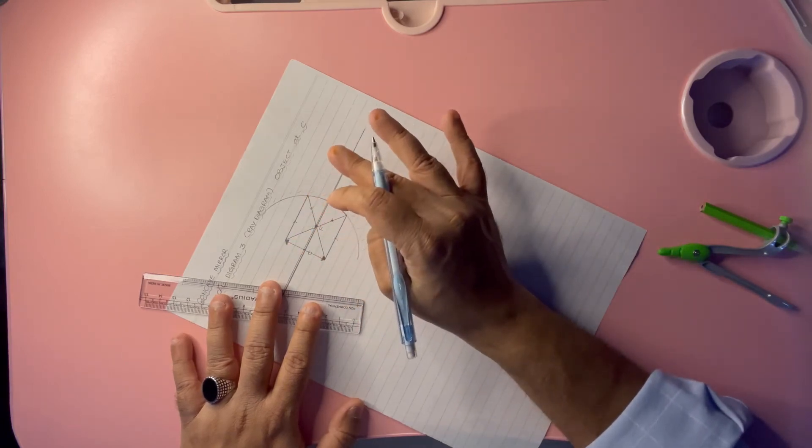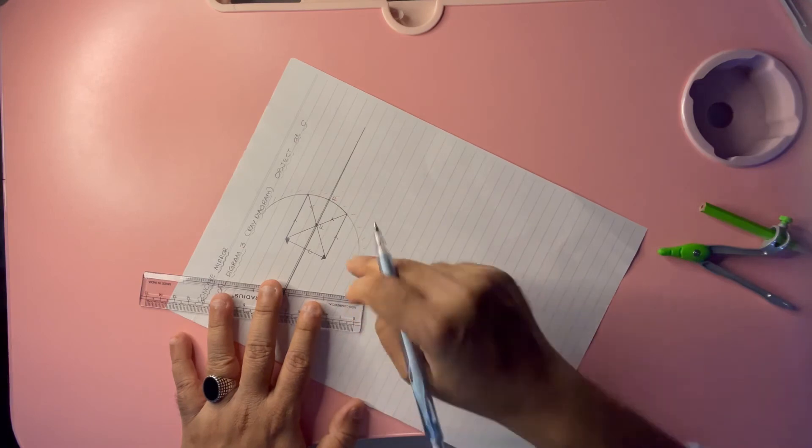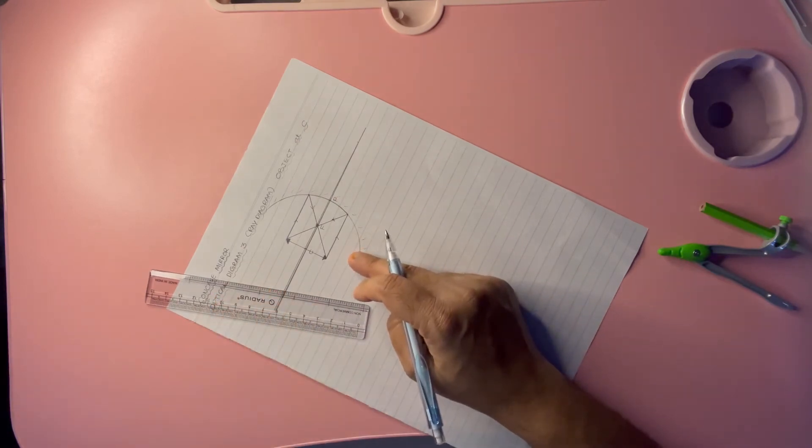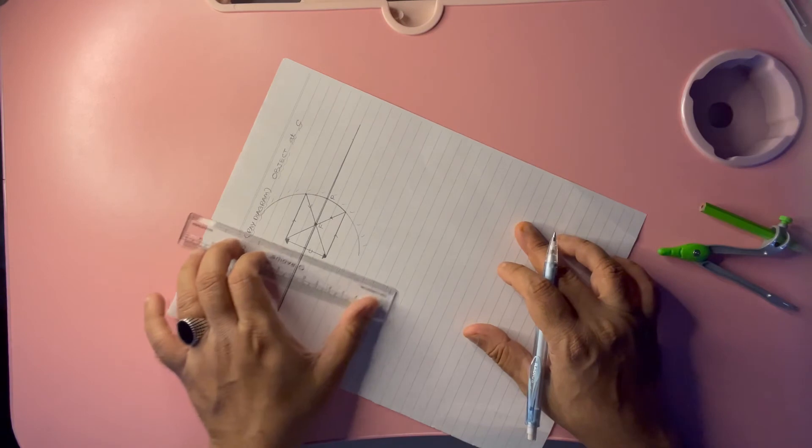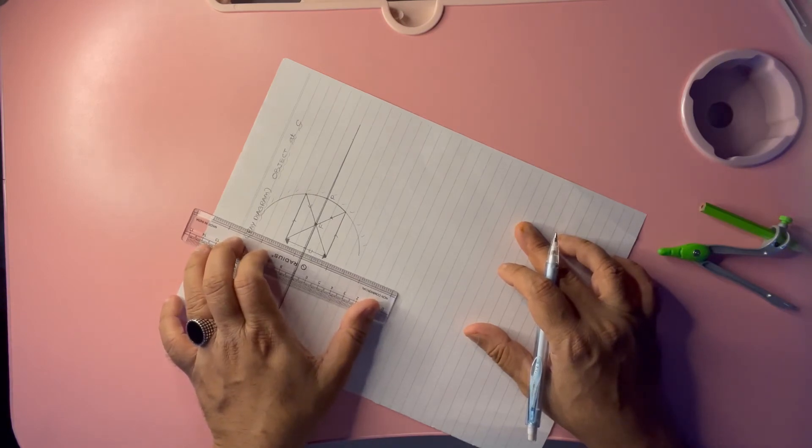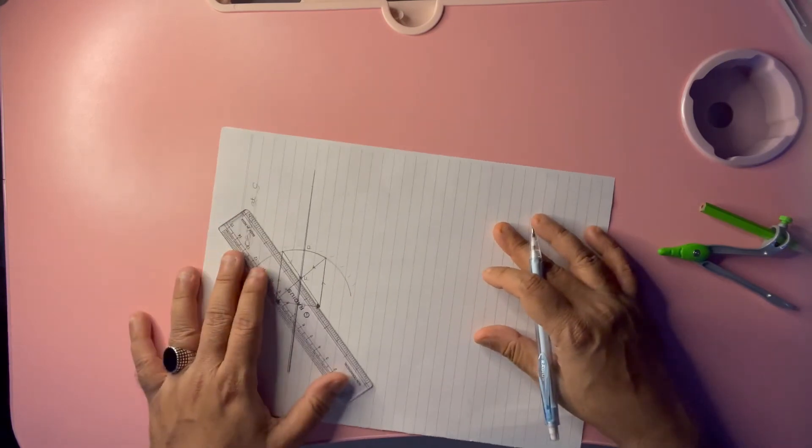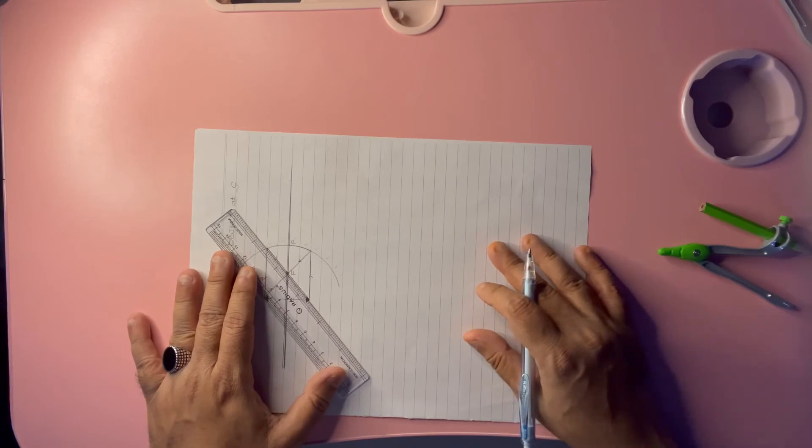But guys, listen—if you try to draw this without cheating, I'm sure the image will come either beyond C or in between C and F, and both cases it is wrong.